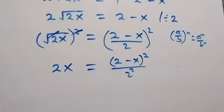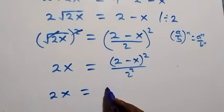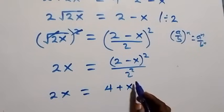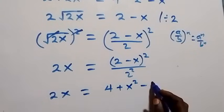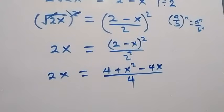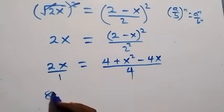So 2x equals the expansion of 2 minus x squared over 4. Expanding the numerator: 2 squared is 4, plus x squared, minus 2 times 2 times x which is minus 4x, all over 4. From here we can cross multiply: 2x times 4 gives us 8x.